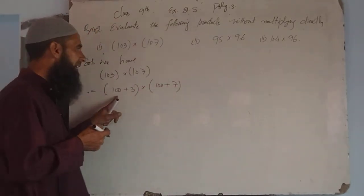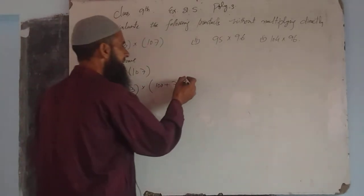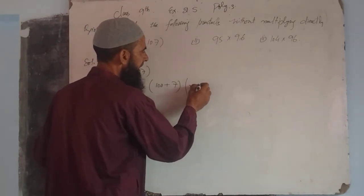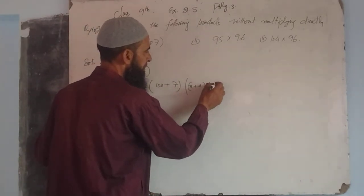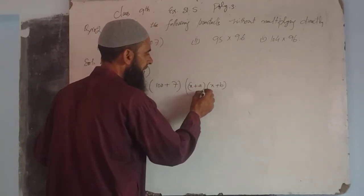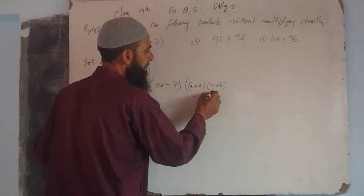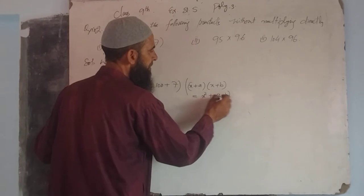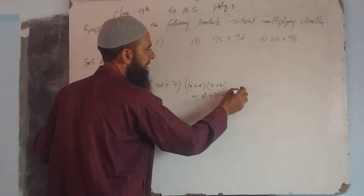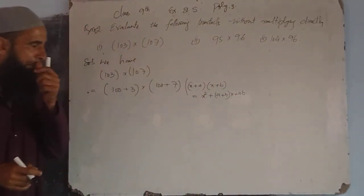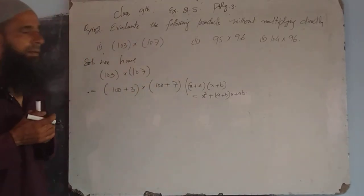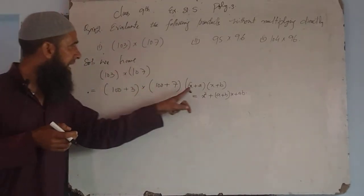We have this identity: (x + a) into (x + b) is always equal to x² + (a + b) into x + ab. This is the identity we are going to use here.